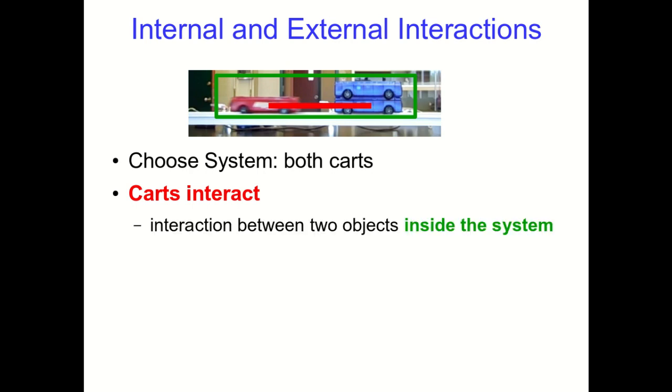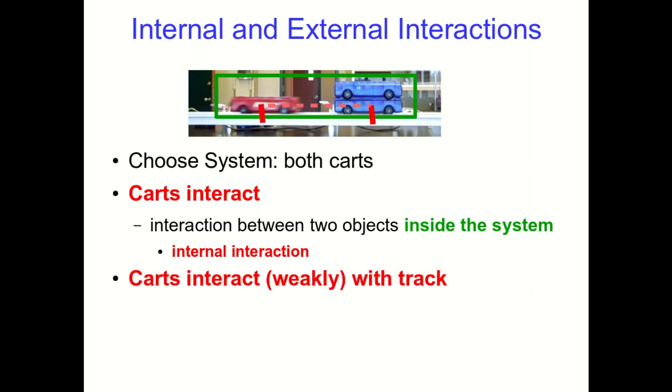This is part of an important idea. We can think about the interaction between the carts and realize that that is an interaction between two objects which are both inside the system. So because of that we call it an internal interaction. On the other hand, if we think instead about the interaction between the carts and the track, that's an interaction which crosses the system boundary. It's between objects that are in our system and an object that is outside the system, and so we call this an external interaction.